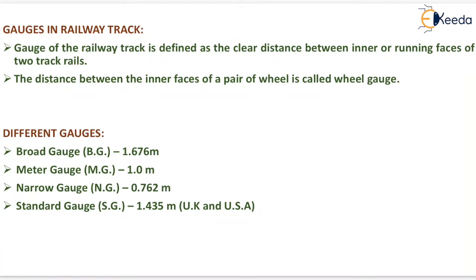Gauges in railway track: the gauge of a railway track is defined as the clear distance between the inner or running faces of the two track rails. The distance between the inner faces of a pair of wheels is called the wheel gauge. Different types of gauges are: broad gauge = 1.676 meters, meter gauge = 1 meter, narrow gauge = 0.762 meters, and standard gauge = 1.435 meters, which is used in the UK and USA.